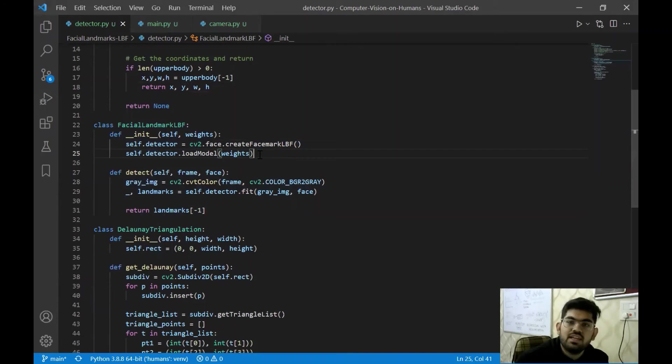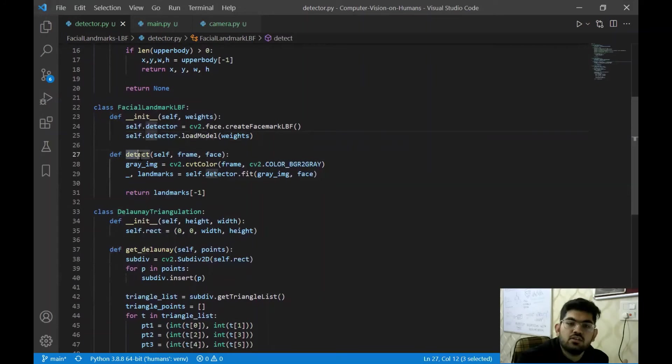Then we have this class of facial landmark LBF. This again using OpenCV library detects the facial landmarks. I have used the pre-trained weights available online. You would get these weights from my GitHub repository as well. In the detect function of the facial landmark class, we pass in the complete image, which is the frame and we pass in the coordinates of where the face is present in the image. This function finally returns a list of landmarks that are going to be present in that image on that face.